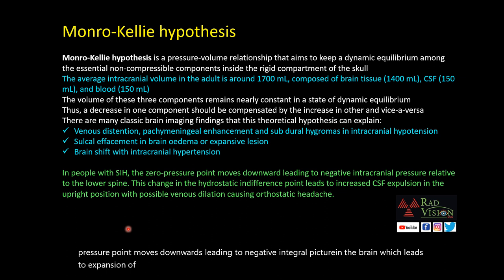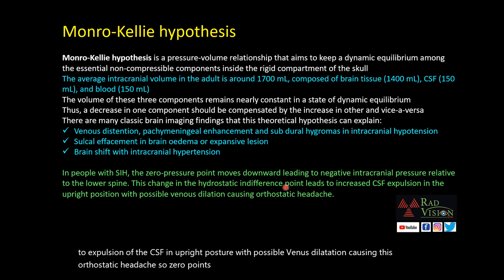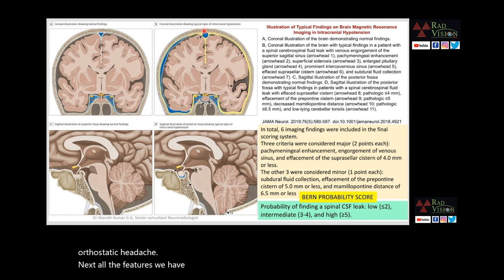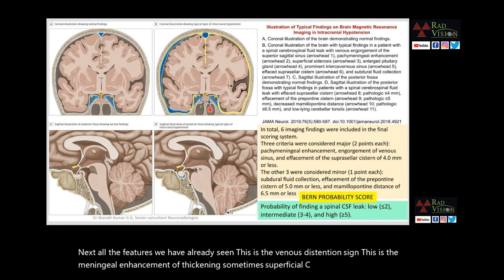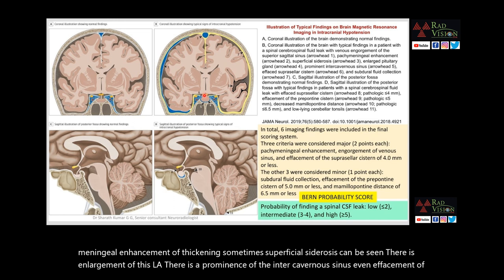To recap all the features: venous distension sign, pachymeningeal enhancement or thickening, sometimes superficial siderosis, enlargement of the sella, prominence of the intercavernous sinus, effacement of the suprasellar cistern, and subdural collections.